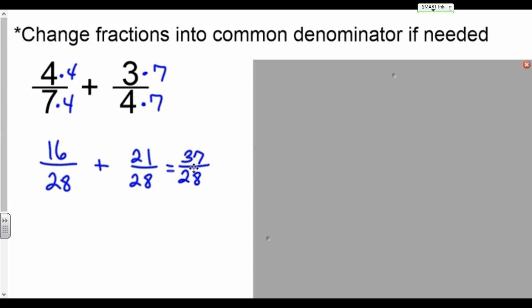Well, slight issue here. You can't have the top number larger than the bottom number. So how many times does 28 go into 37? It goes in once. How many is left over? 9. Keep the same denominator. There's your answer. We can't simplify it anymore.